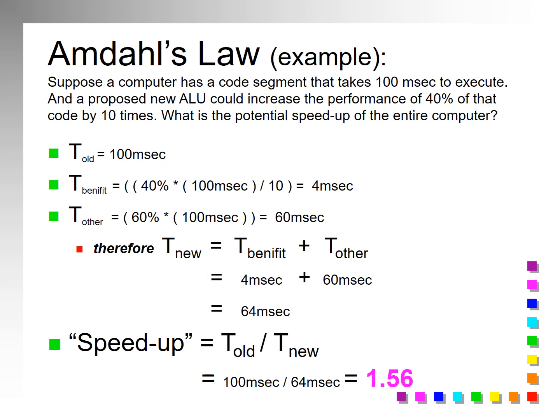So you add them together and T new is the benefit plus the other, and we get 4 plus 60 equals 64. Then we plug into the speed up the old over the new. So it took 100 milliseconds before and now we're dividing by a smaller number, so we're going to speed up. T old was the longer time, T new is faster, and we divide the old by the new and we get 1.56.